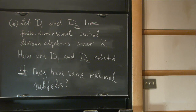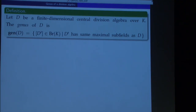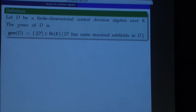Before I show you some results, let me try to quantify the problem by giving the definition of the genus. Let D be a finite dimensional central division algebra over a field K. We define the genus of D to be the collection of all Brauer classes defined by division algebras having the same maximal subfields as the original algebra D. Someone working in quadratic forms told me that every use of the word 'genus' is subject to some restrictions — it should be of local-global nature and it should always be finite.